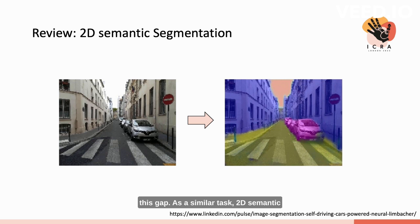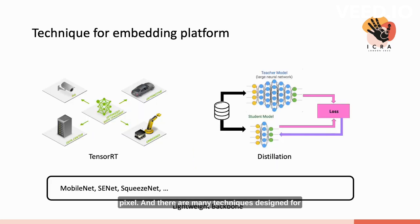As a similar task, 2D semantic segmentation tries to assign semantic labels to each pixel. And there are many techniques designed for embedded platforms in 2D semantic segmentation, like TensorRT, network distillation, and lightweight backbone. If we can utilize these techniques, we can achieve our target.